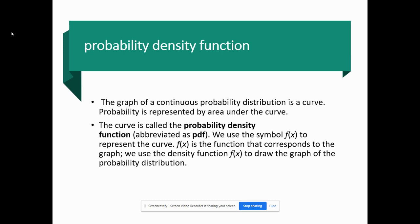The probability is represented by the area under the curve. If anybody is taking calculus, basically this is calculus. Calculus always wants to know the area for stuff that is not easy to find like curves. The curve is called the probability density function, abbreviated as PDF. We use the symbol f(x) to represent the curve. f(x) is the function that corresponds to the graph. We use the density function to draw the graph of a probability distribution.